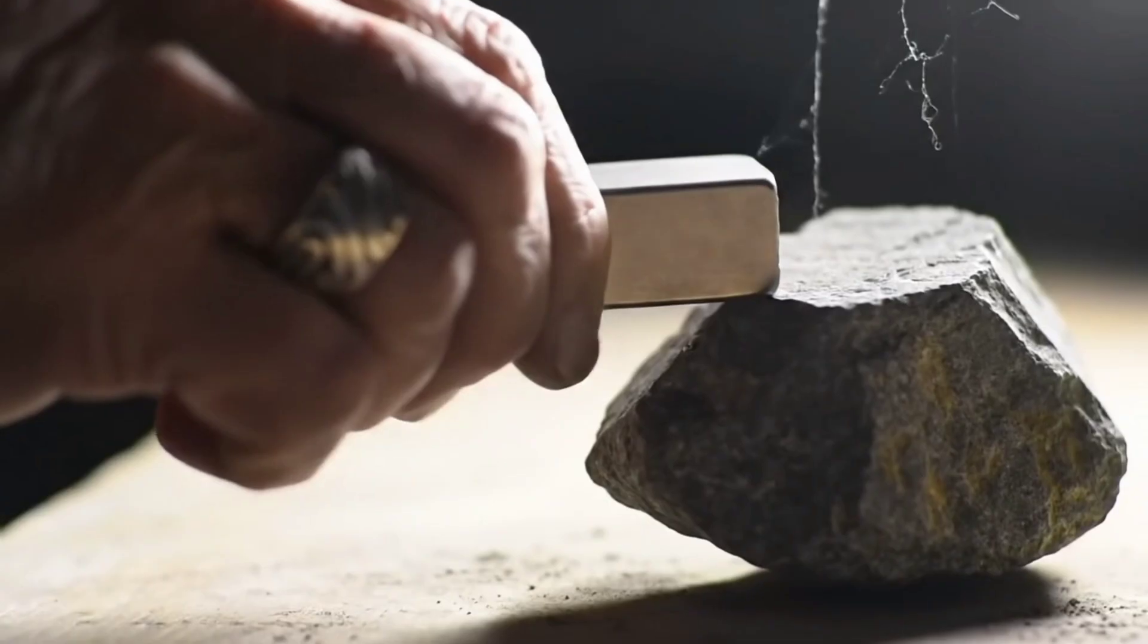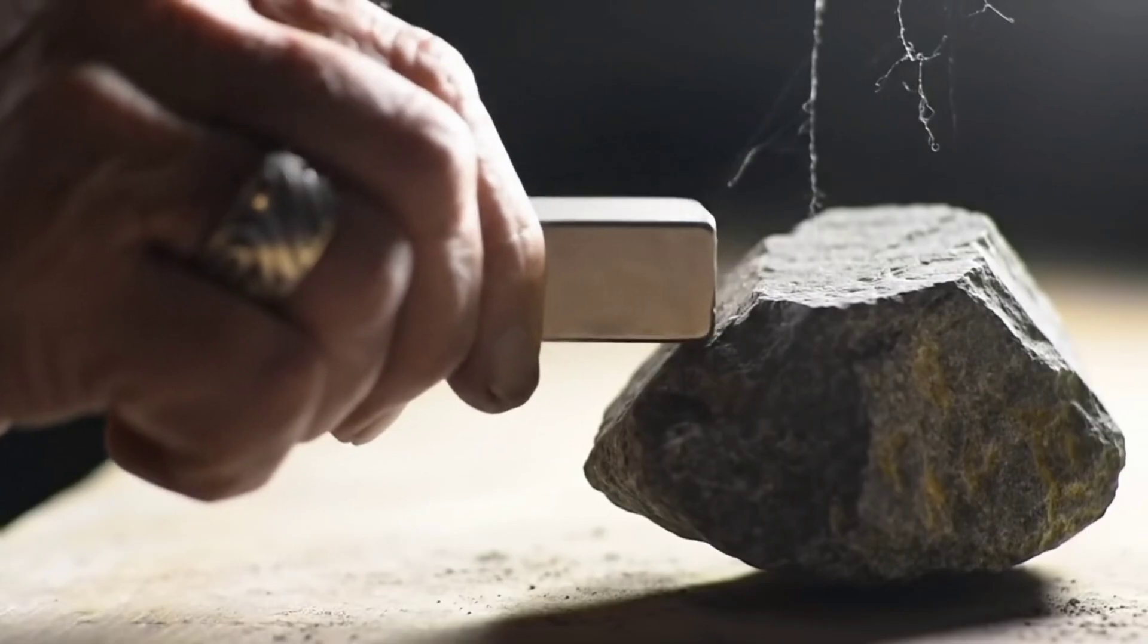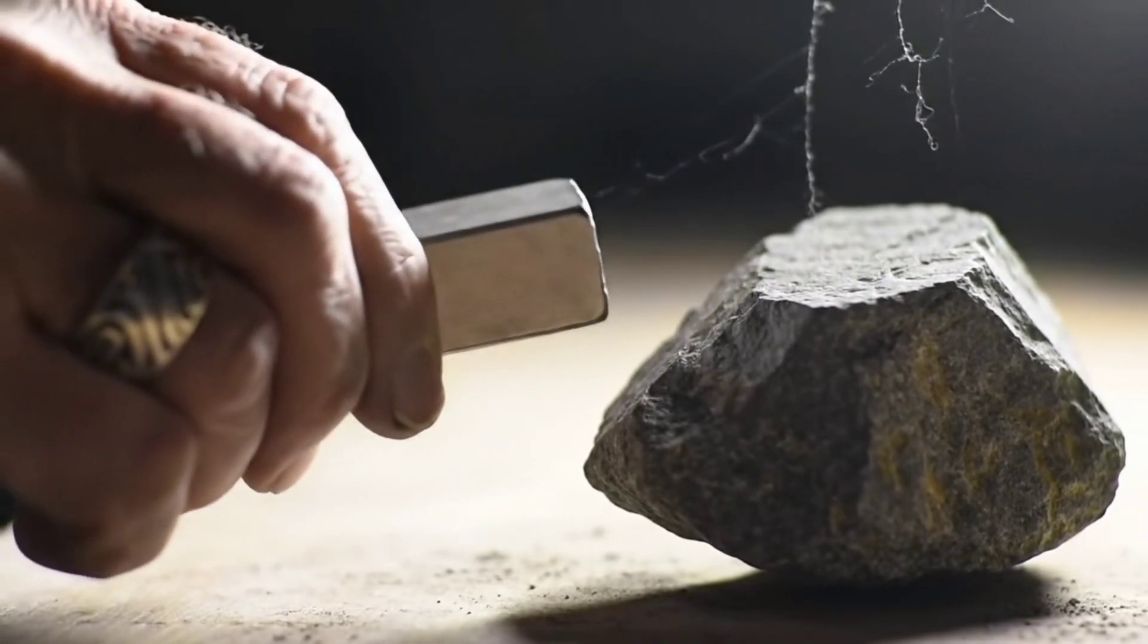First, try the magnet test. If the rock is strongly attracted, it's a good sign it could be an iron meteorite.